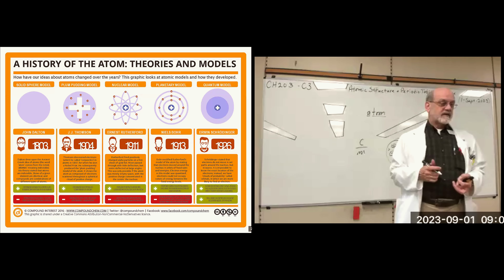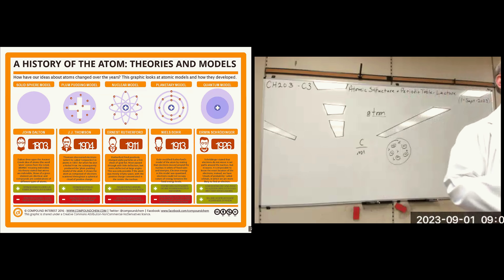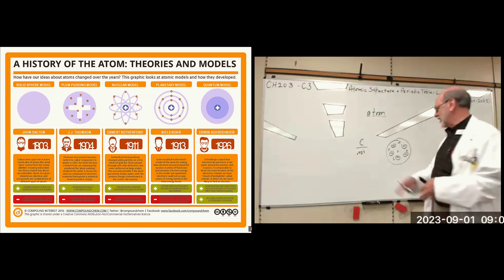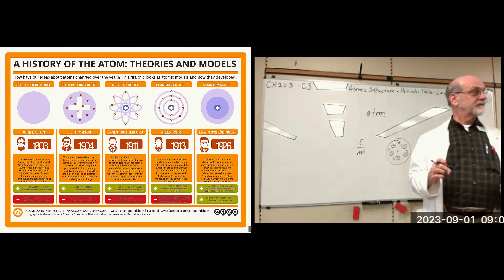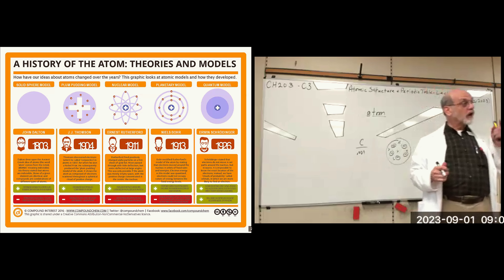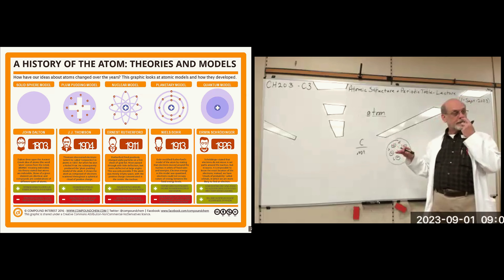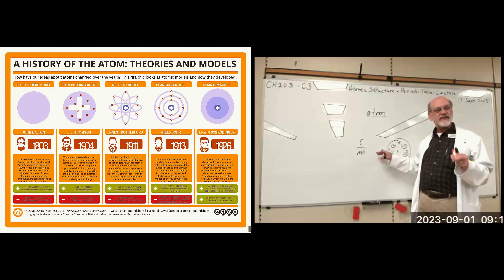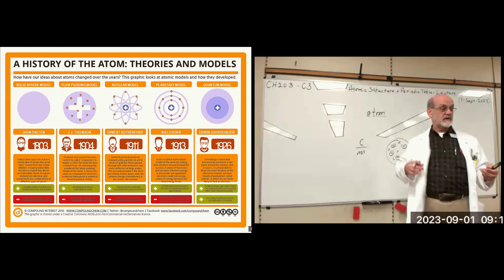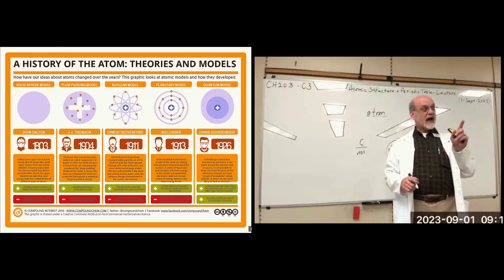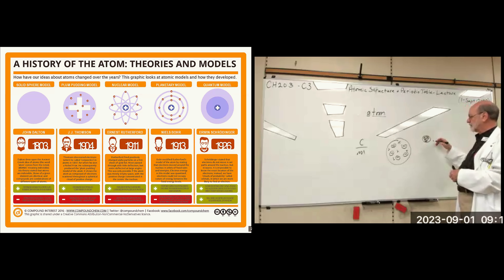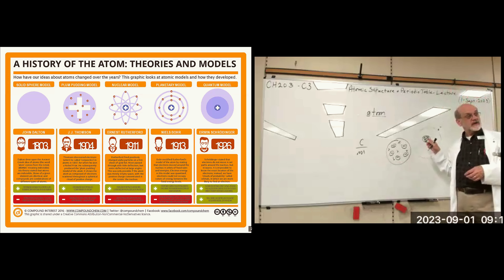Ernest Rutherford said to himself, 'This is stupid, that doesn't make any sense, and I'm going to prove it's wrong.' His model was the nuclear model. He thought there was a particle with an opposite charge, and he knew that the mass of the electron accounted for just a small fraction of the atom's mass — there has to be something heavier in there. He proposed a nucleus with positive-charge particles in it, and the electrons are out in this empty space. Most of the mass is concentrated in the nucleus.